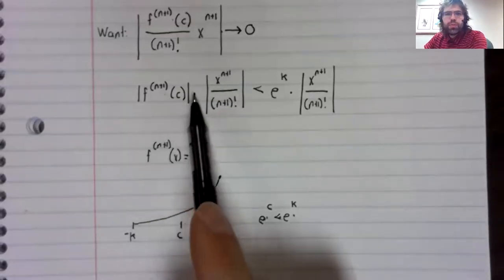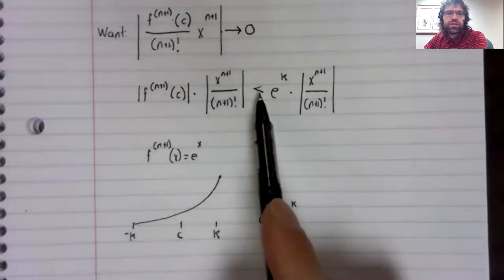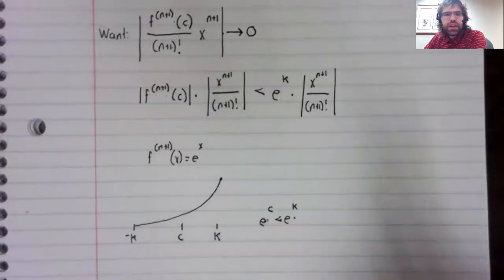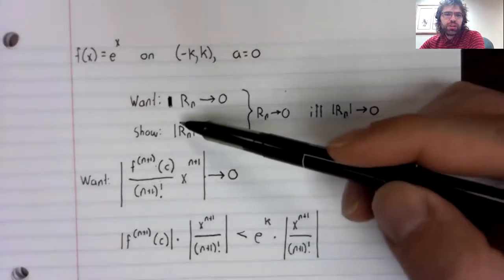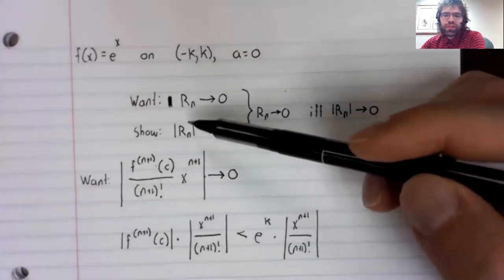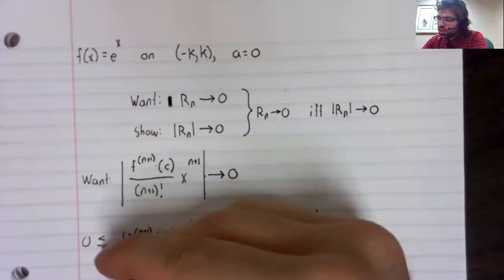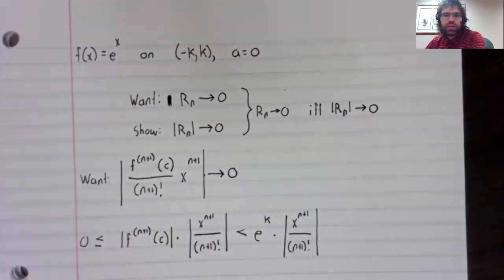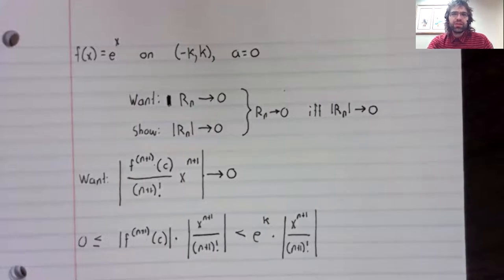So here's what we want to go to zero. It's less than this. And now we'll see our justification for wanting these absolute values. It's greater than or equal to zero. And what we're going to do now is use the squeeze theorem.